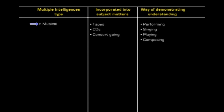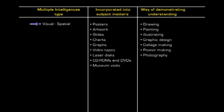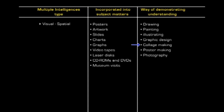For musical intelligence: tapes, CDs, concert going, performing, singing, playing, and composing. For visual-spatial intelligence: posters, artwork, slides, charts, graphs, video tapes, laser discs, CD-ROMs, DVDs, and museum visits. Ways of demonstrating include drawing, painting, illustrating, graphic design, collage making, poster making, and photography.